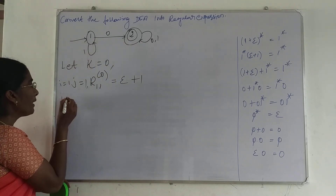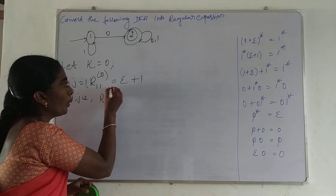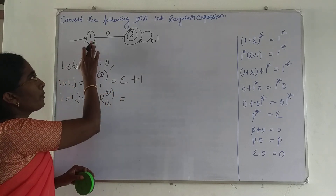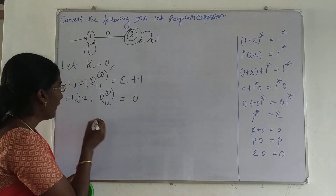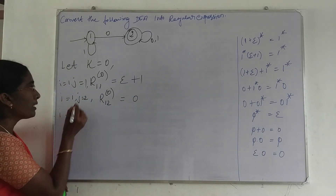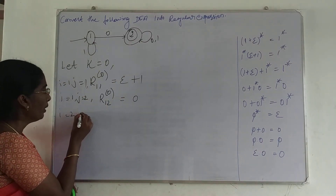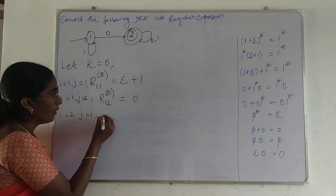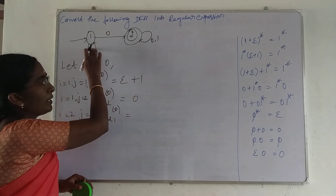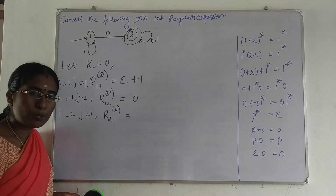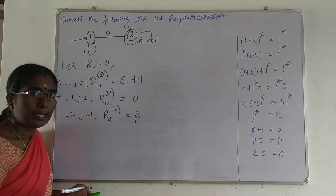Next, the transition from state 1 to 2: I=1, J=2, giving R12 power 0. The transition value from state 1 to 2 is input symbol 0, so R12⁰ = 0. Next, transition from state 2 to 1: I=2, J=1, giving R21 power 0. There is no such transition in this automaton, so R21⁰ = ∅ (phi).